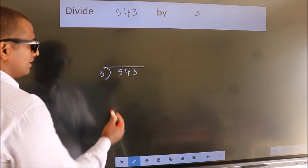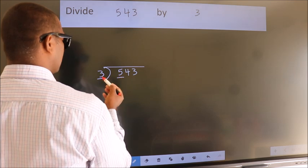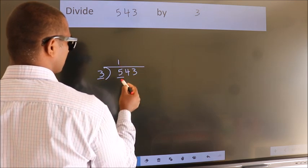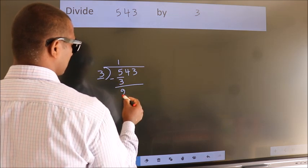Next, here we have 5, here 3. A number close to 5 in 3 table is 3 1s 3. Now, we should subtract. We get 2.